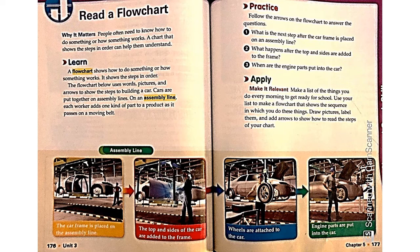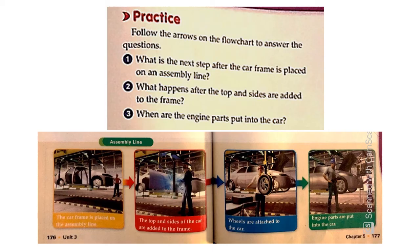So on the next page on page 177 we're going to answer some questions using this flowchart. Let's have a closer view. So follow the arrows in the flowchart to answer the questions. We're going to answer these questions based on what we read on this flowchart. Question number one is what is the next step after the car frame is placed on an assembly line? Question number two is what happens after the top and sides are added to the frame? And the last question is when are the engine parts put into the car?